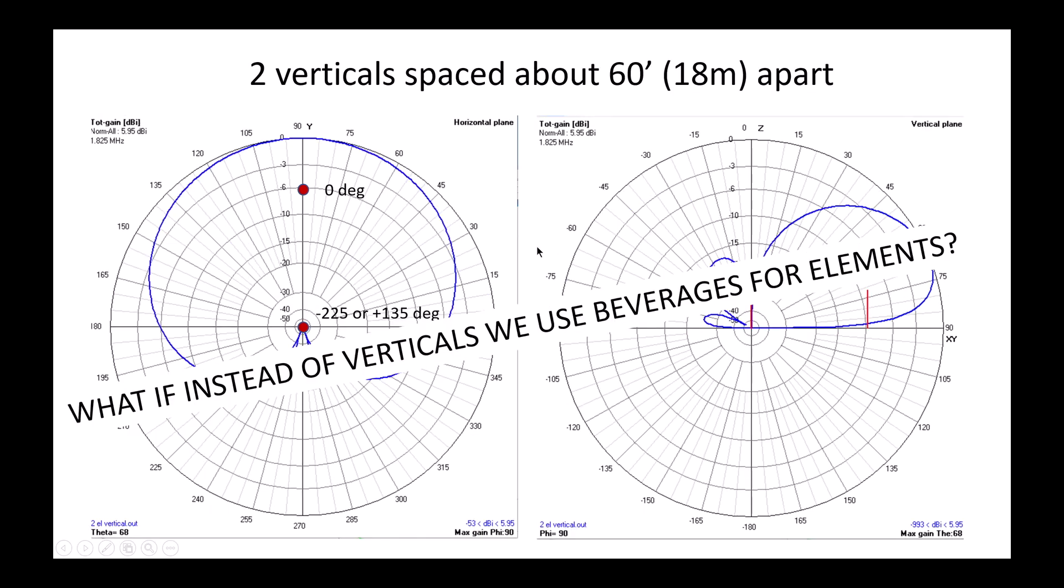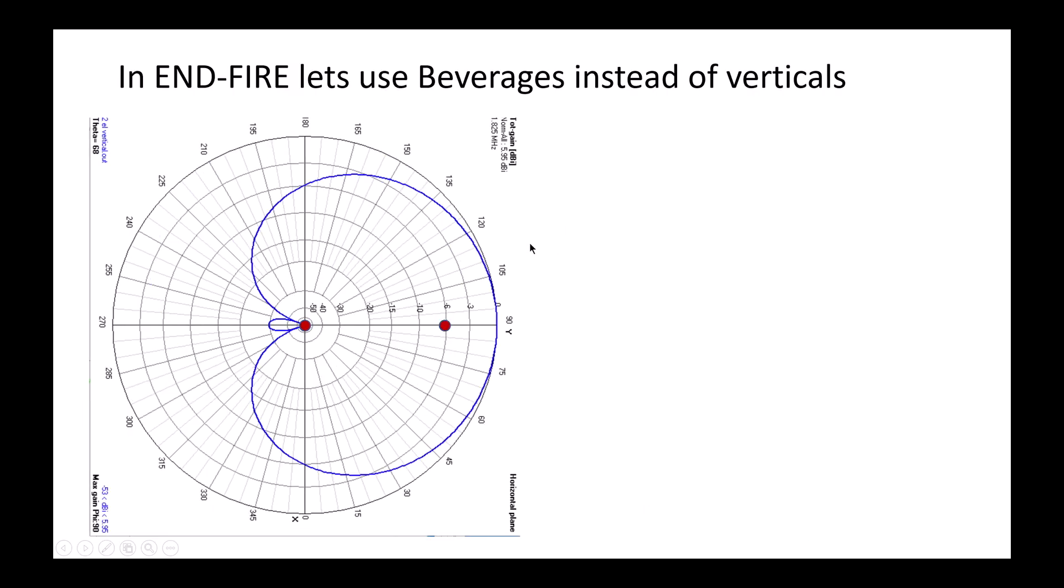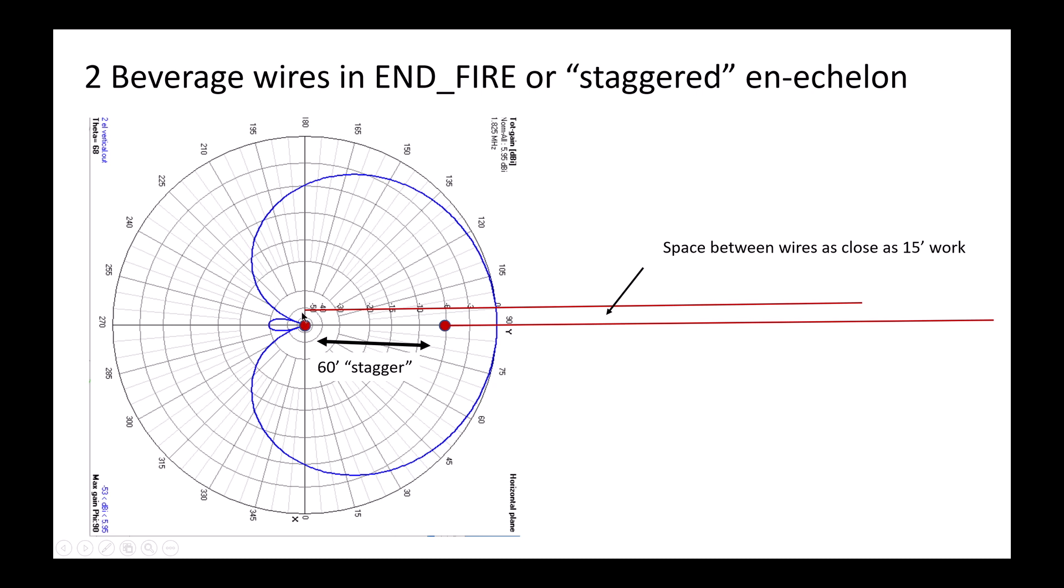Okay, what if instead of verticals we use beverages for the elements? So what we'll do is we'll place two equal length beverage wires beginning at the same spot as each vertical. In other words, they're still offset by 60 feet. We call this, though, instead of spacing, let's call it the stagger. The spacing between the wires can actually still be very close, like down to 15 feet apart, and there really is not much degradation between the array.